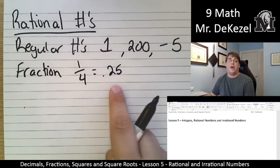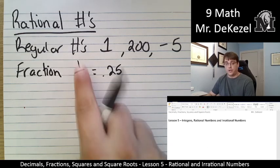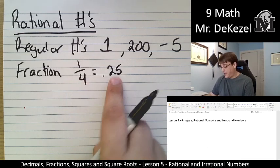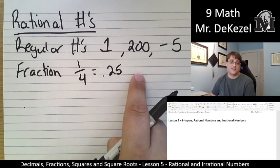And again, 0.25 ends, right? There's no more. 1 quarter is equal to 0.25, and no more after that. It's exactly 0.25.